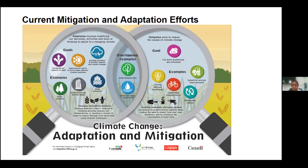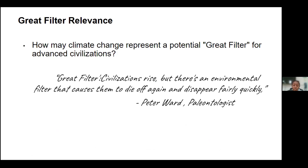These strategies aim to reduce greenhouse gas emissions and limit global warming, but their effectiveness varies by region and depends on the cooperation of governments, businesses, and individuals. Climate change may also act as a significant great filter for advanced civilizations. If a society cannot effectively address climate change, it could become a major hurdle in its development. Consequences such as severe weather events, resource scarcity, and social instability could collapse civilizations, suggesting climate change could explain the Fermi Paradox and the absence of advanced extraterrestrial civilizations.